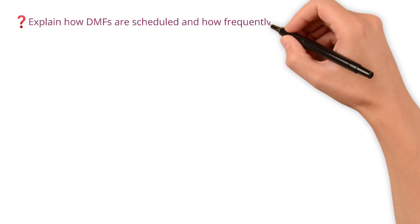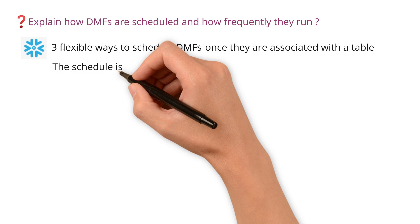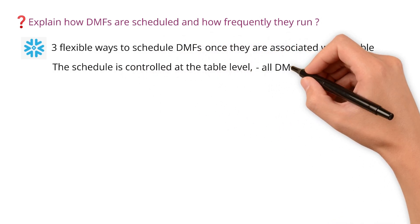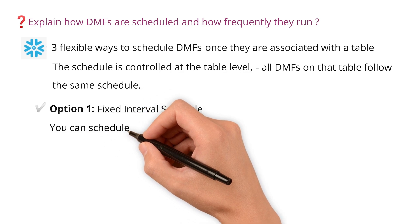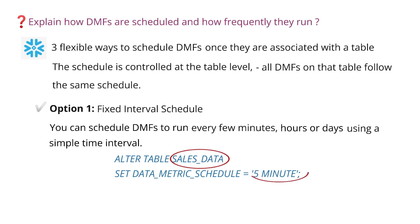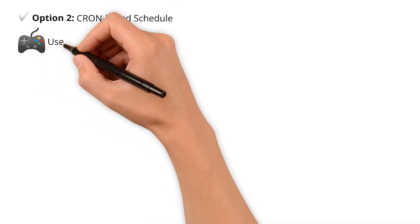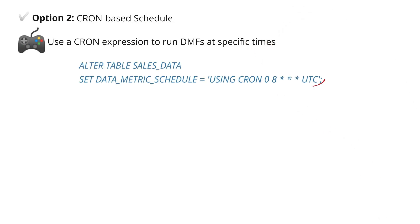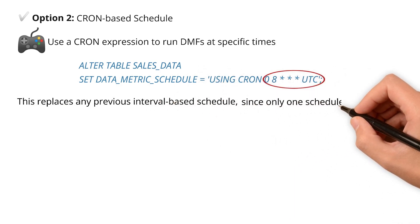How are DMFs scheduled and how frequently do they run? Snowflake gives you three flexible ways to schedule DMFs once they are associated with a table. The schedule is controlled at the table level, meaning all DMFs on the table follow the same schedule. Option one: fixed interval schedule — you can schedule DMFs to run every few minutes, hours, or days. Option two: cron-based schedule — for more control, you can use a cron expression to run DMFs at specific times, like daily at 8 AM. Only one schedule can exist per table.